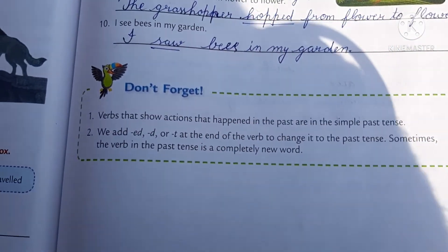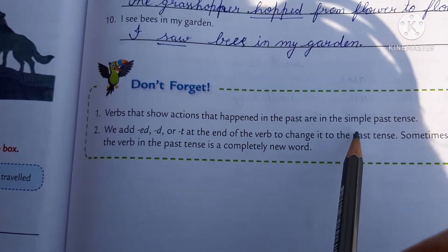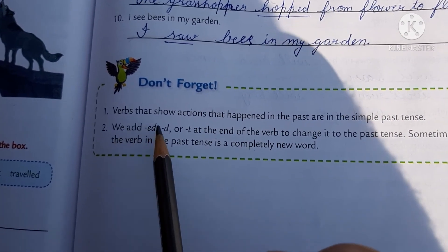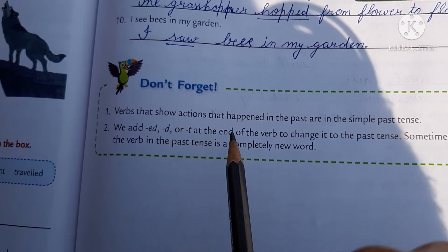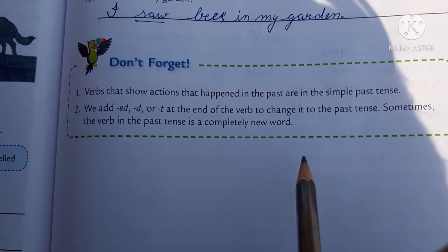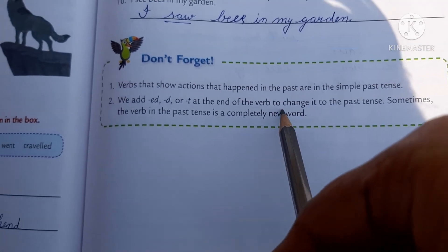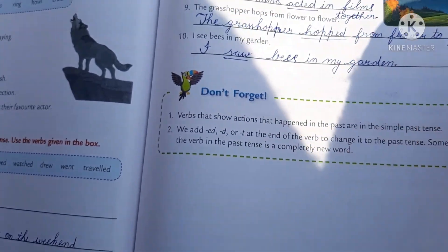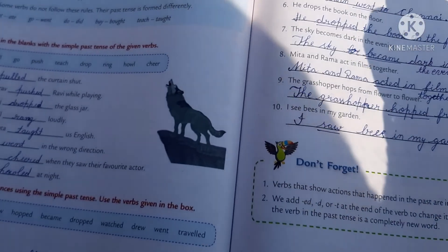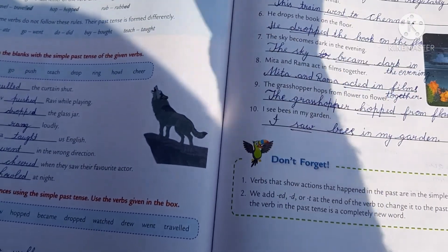Don't forget: verbs that show actions that happened in the past are in the simple past tense. We add ED, D, or T at the end of the verb to change it to the past tense. Sometimes the verb in the past tense is a completely new word. Make the rules clear in your mind — how to change verbs into simple past tense. We will continue in the next class.